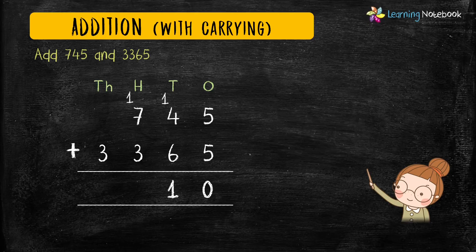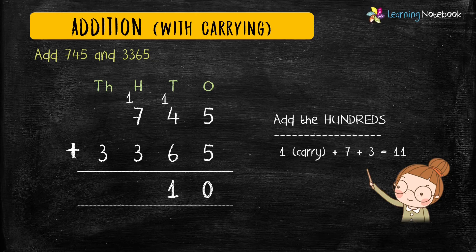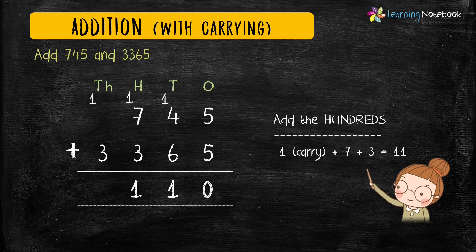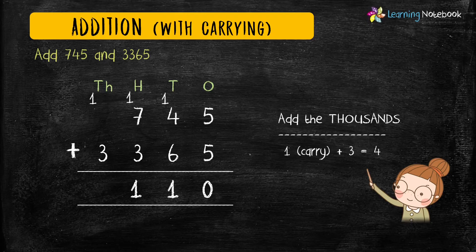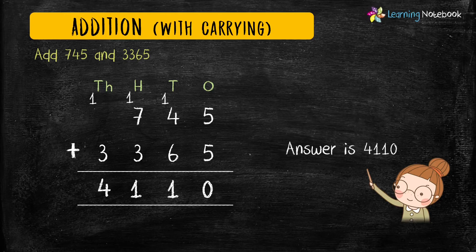so we will carry 1 to the hundreds place and 1 comes in the answer. Next add the digits at hundreds place: 1 carry plus 7 plus 3 equals 11. So carry 1 to the thousands place and 1 comes in the answer. Now add the digits at thousands place: 1 carry plus 3 equals 4. So our answer is 4110.